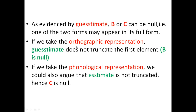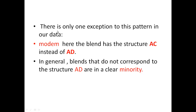If we take the orthographic representation, guesstimate does not truncate the first element — B is null. If we take the phonological representation, we could argue that estimate is not truncated and C is null, meaning the whole of estimate is kept as D. Both analyses are valid depending on whether we consider orthographic or phonological representation.